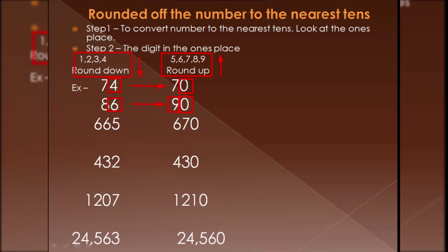Now here we have a three-digit number, but we still round to the nearest tens. The tens place is 6 and the one's place is 5. Since the one's place is equal to 5 — and I already told you, if a number is equal to or greater than 5 we add one to the tens place — the tens place increases by one, the one's place becomes zero, and the hundreds place remains as it is.